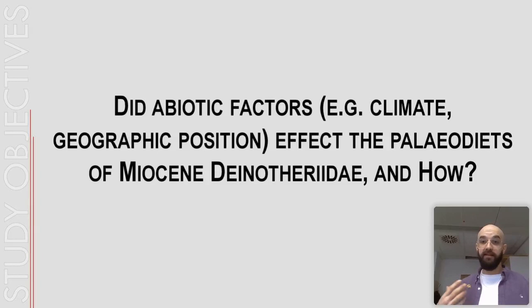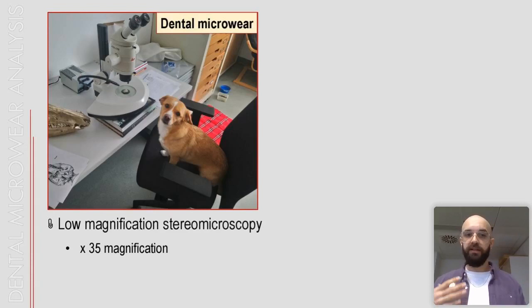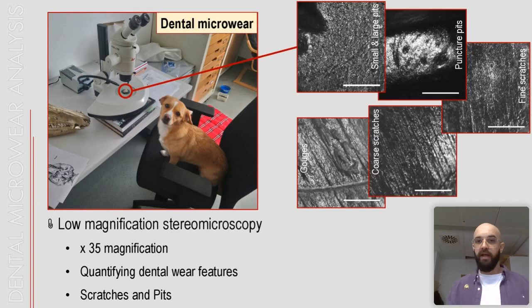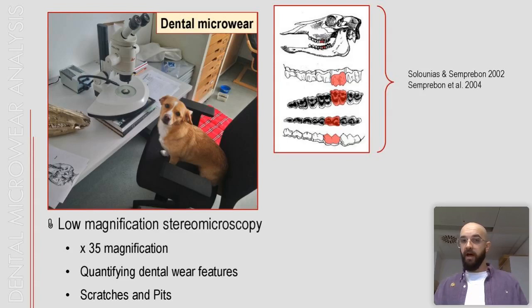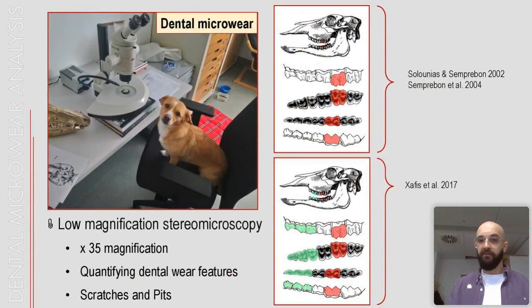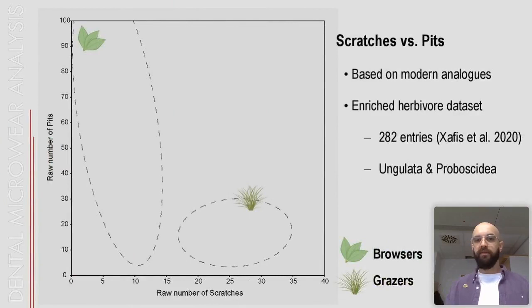In order to answer this question, I employed a multiproxy analysis using dental wear studies. The first method I used is dental microwear analysis — specifically low magnification stereo microscopy. With only 35 times magnification, I analyzed and quantified dental wear features: scratches and pits of different sizes found on enamel surfaces of teeth. For my general approach I used the generalized methodology established by Solounias and Semprebon 2002, and Semprebon and others 2004. For the sampling protocol I employed the protocol by Xafis and others 2017, boosting my sample size by including both premolars and molars.